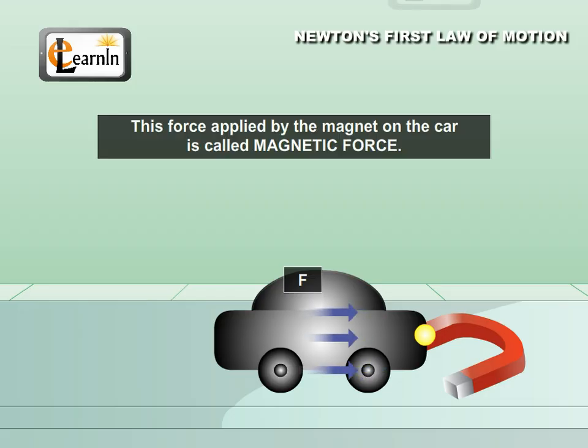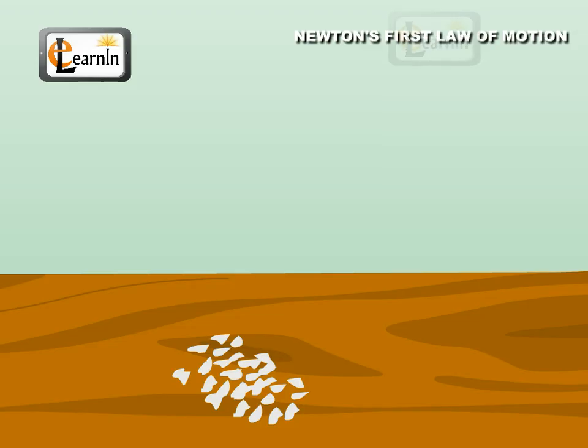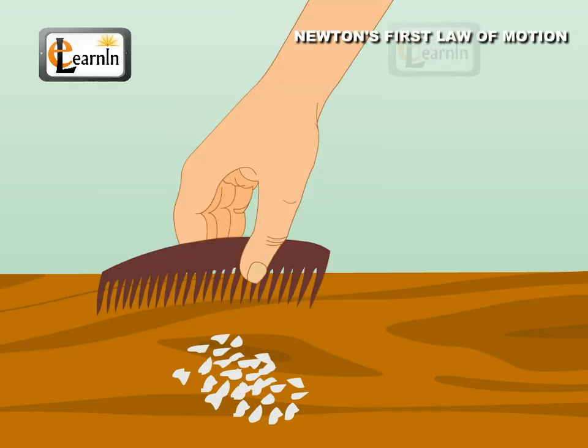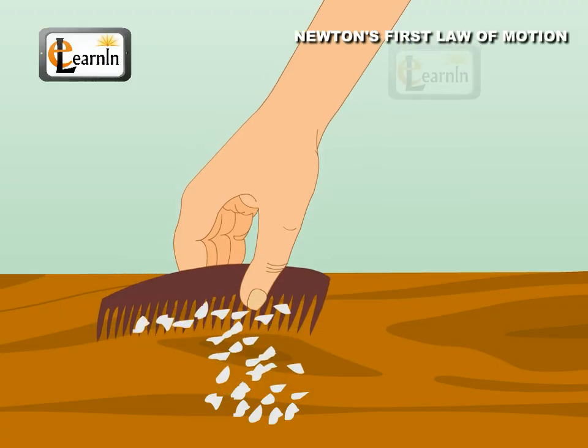The force applied by the magnet on the car is called magnetic force. Take a plastic comb and comb dry hair repeatedly. Now, place the comb near a small cork piece or pieces of paper without touching them. Observe that these paper pieces start moving towards the comb and this is due to electrical force acting between them.